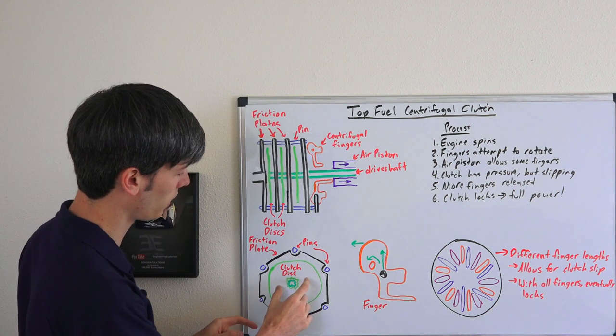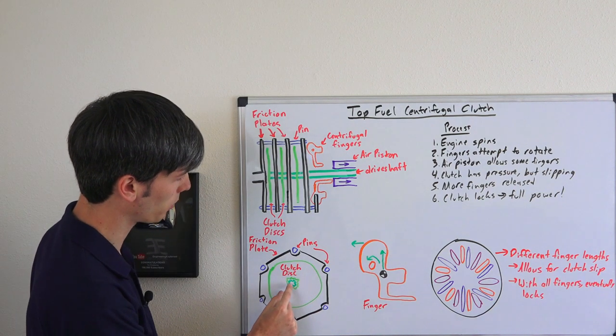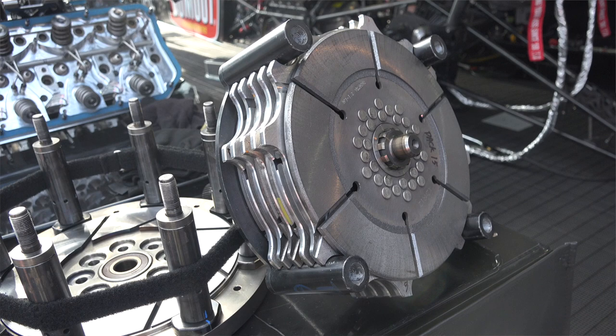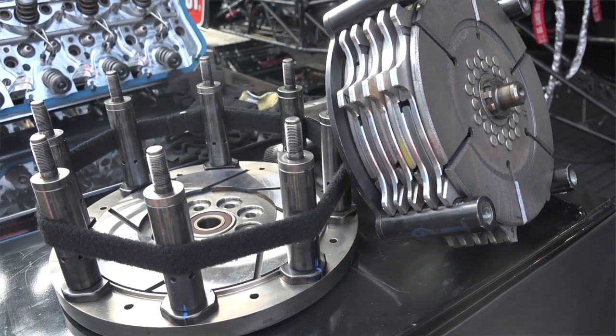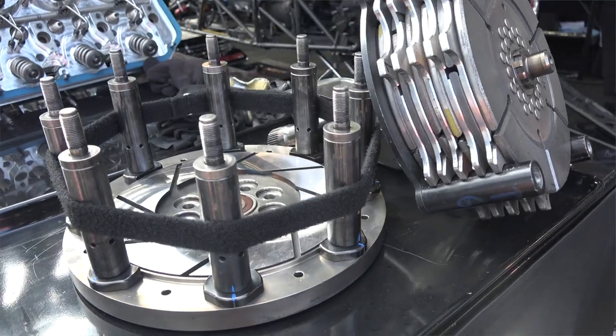The clutch disc is splined to a drive shaft or shaft going into transmission for other cases, but top fuels don't use transmission so it just would be the drive shaft.